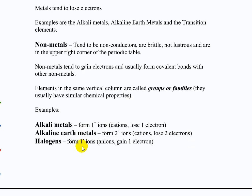A couple of things we can be pretty certain of. Alkali metals — that's the group all the way over to the left, hydrogen on down — form one-plus ions. You can pretty much bet that if you have lithium in a compound, it's going to be lithium plus one; sodium will be sodium plus one, etc. The alkaline earth metals are right next door and tend to lose two electrons to form two-plus ions — that's a pretty fair bet too.